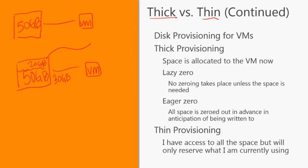Thick provisioning comes in different styles: lazy zeroed and eager zeroed. Lazy zeroed says I'm not going to zero out any of the space I've allocated for this virtual machine. This virtual machine may have been written over several times, and it's got zeros and ones that make up the entire data store. I'm not going to zero this out or get ready to write anything to those sectors — I'm just going to leave it how it is, and when I need to, that's when I will zero out this area and get it ready to write.